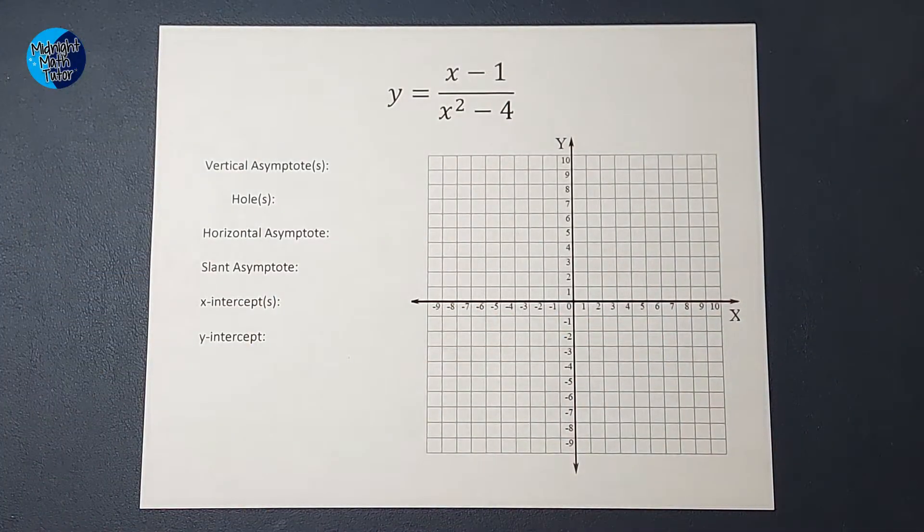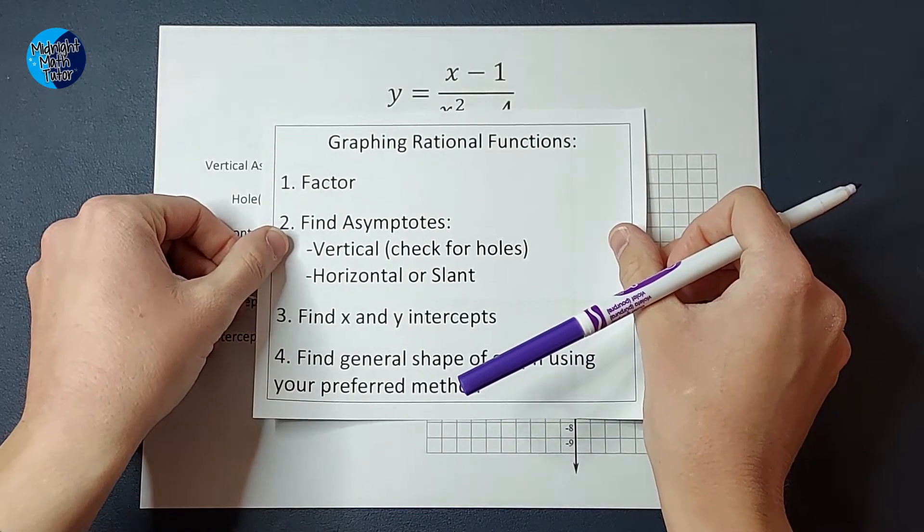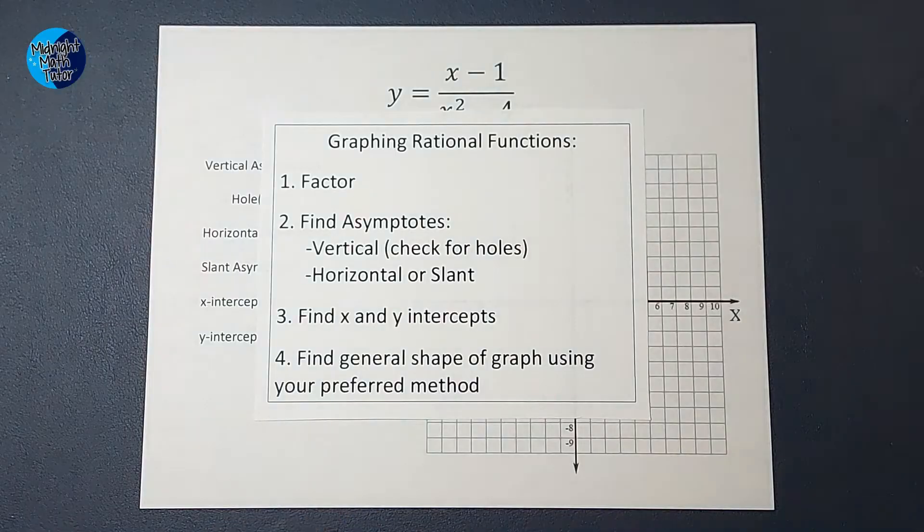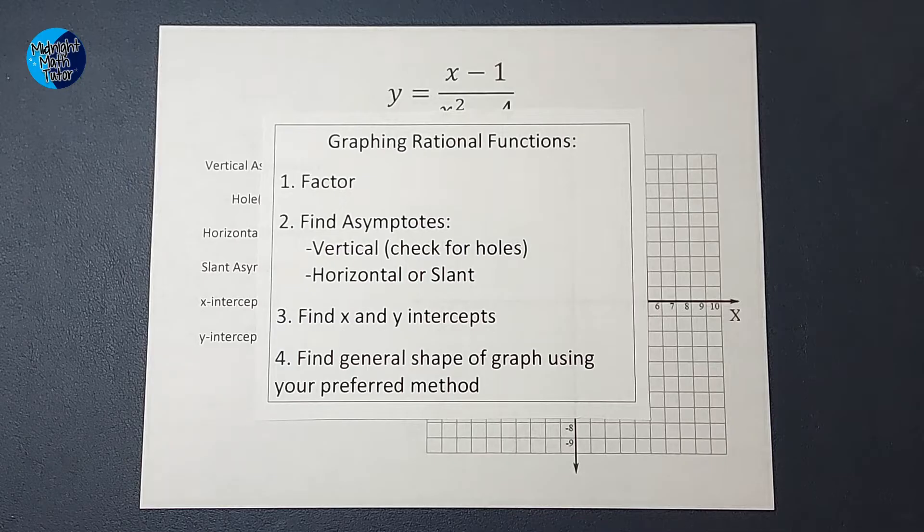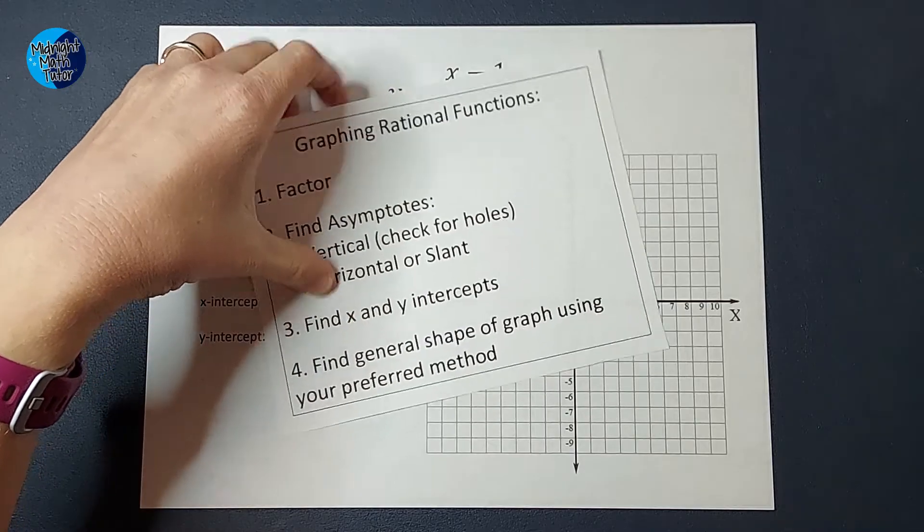We love it when we have steps to follow. All right, so we have four steps here. First, we're going to factor. Second, we're going to find our asymptotes and check for holes. Three, we are going to find our x and y intercepts. And fourth, we're going to figure out the general shape of our graph using our preferred method, which we will talk about once we get there.